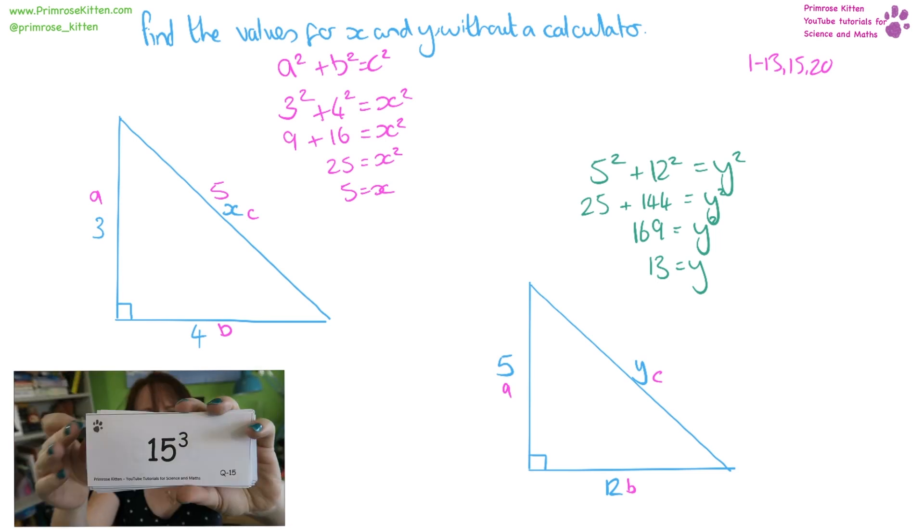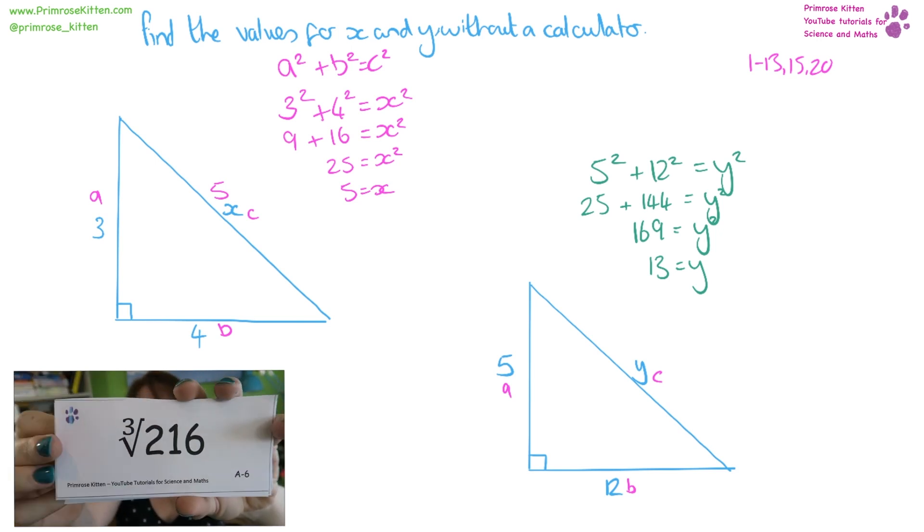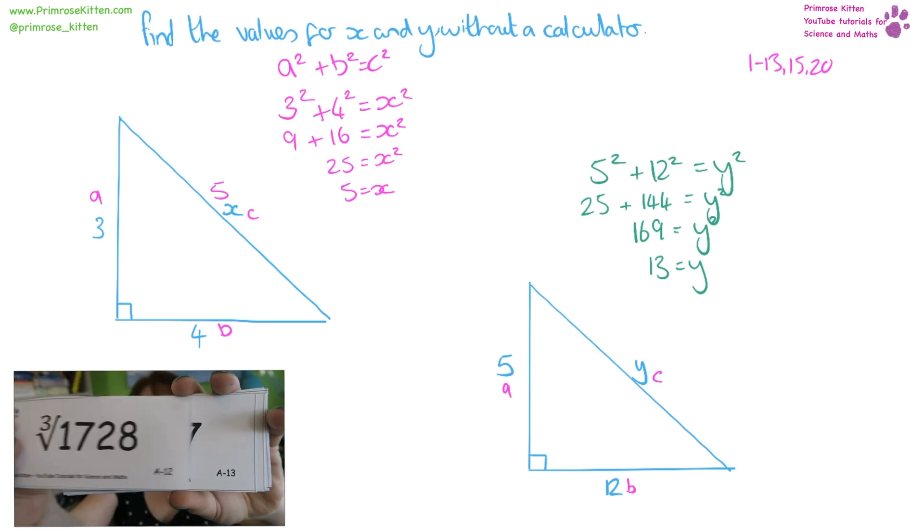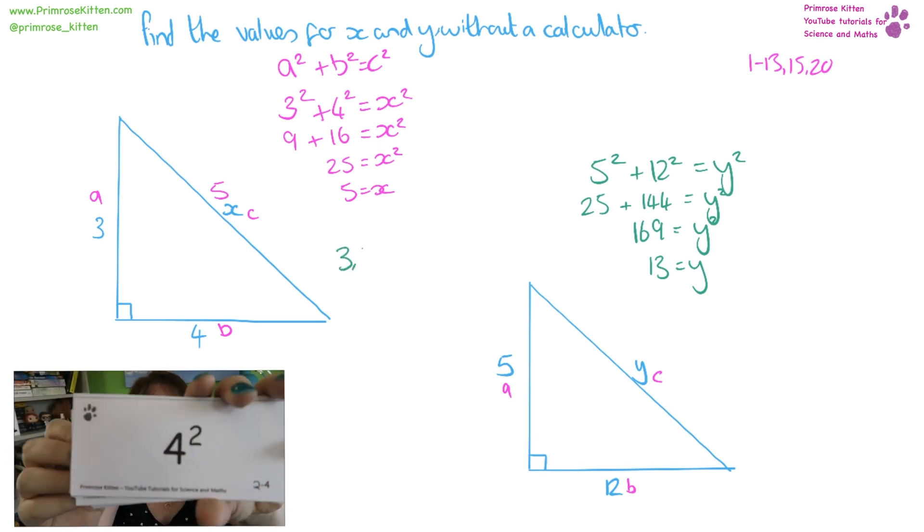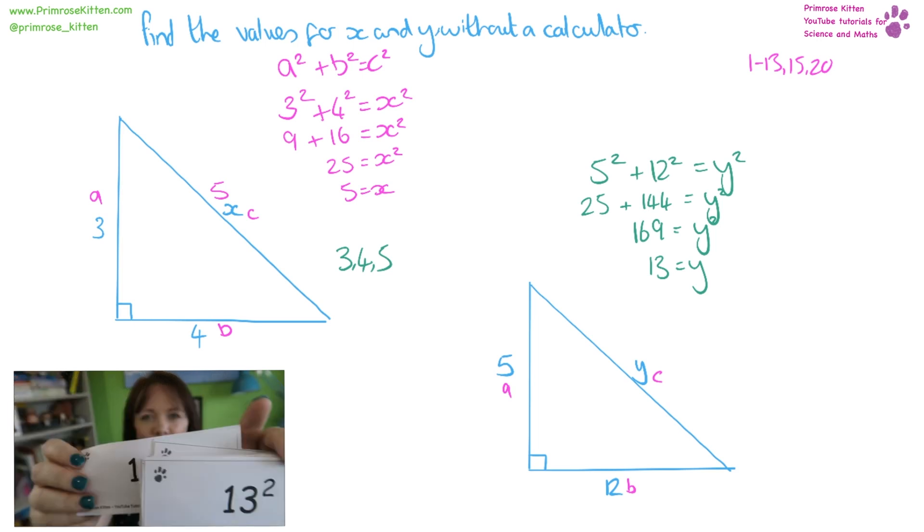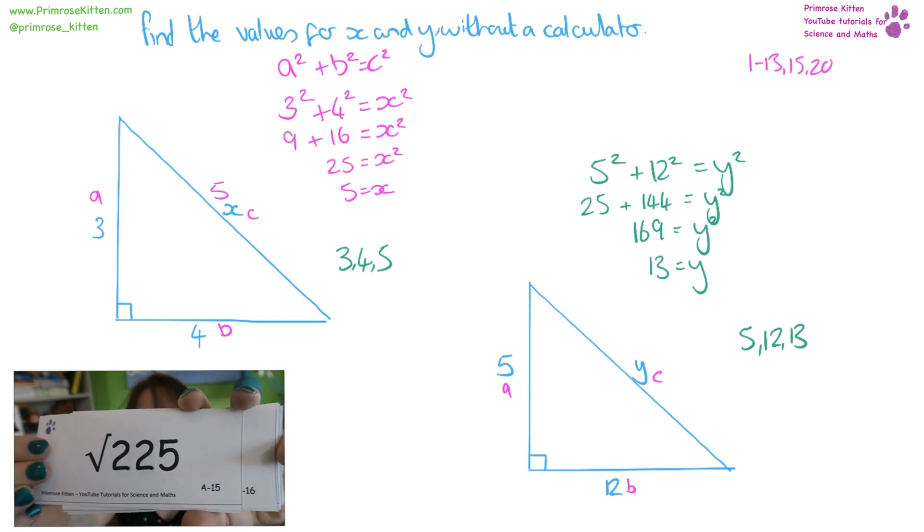That may seem a bit hard for some of you but if you learn your square numbers it's going to make it much easier. There is also a set of things called Pythagorean triplicates, which means 3, 4 and 5 make a right angle triangle. And 5, 12 and 13 make a right angle triangle.